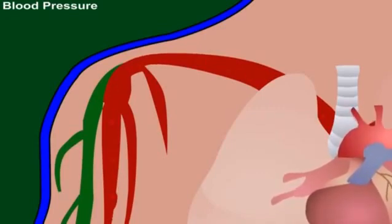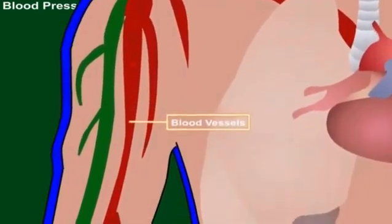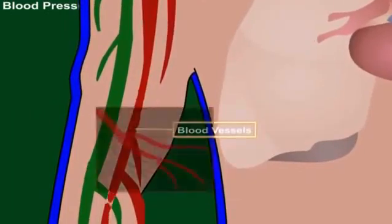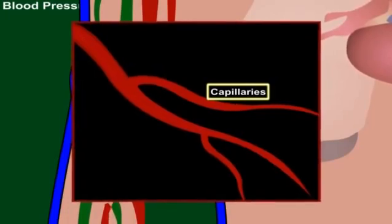Arteries receive blood from the heart, so the blood pressure is higher in the arteries. The blood pressure gradually decreases as the blood flows into capillaries.